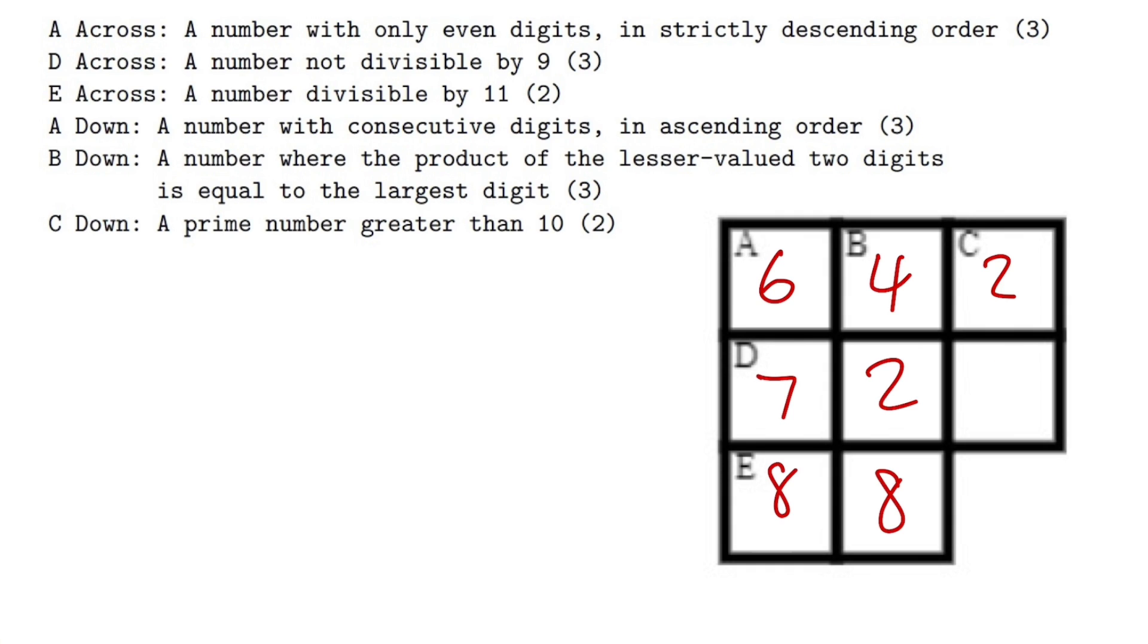Now finally we just have to make sure we fill in this right here, and it's a prime number greater than 10. So we have some possibilities right? We can have 21, it's not prime. 23, 25 it's not prime, 27 it's not prime, 29 it's a prime. So is this 3 or 9? Well here's the deal, it would be 3 because we're looking at this right here, a number not divisible by 9. D across, we have 7-2 already. If I put 9 here, then 729 is divisible by 9 because divided by 9 you get 81. So therefore the answer right here must be equal to 3. And now we're done, that's it.